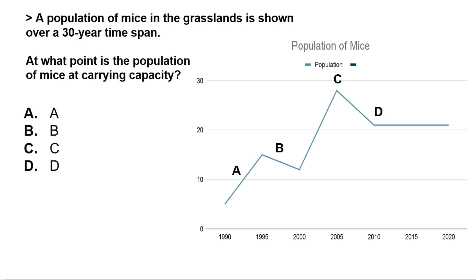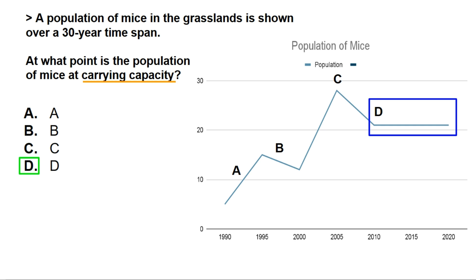In this question, we are asked to find the carrying capacity. In any question where you are asked to find the carrying capacity, it is where the graph levels out and the population line is horizontal. So in this case, our answer is D, because here the line is horizontal and level, making our answer option D.